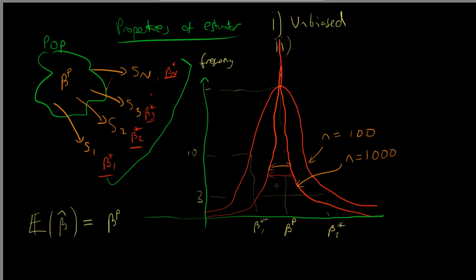And notice that as I've increased the sample size, the values which I get for beta star are closer and closer to the true population parameter. In fact, as we increase our sample size arbitrarily, we would hope that we wouldn't get a distribution. We would just get a line at beta P.